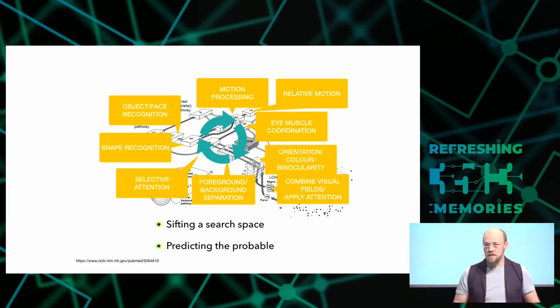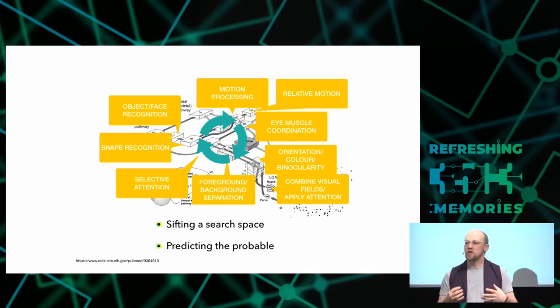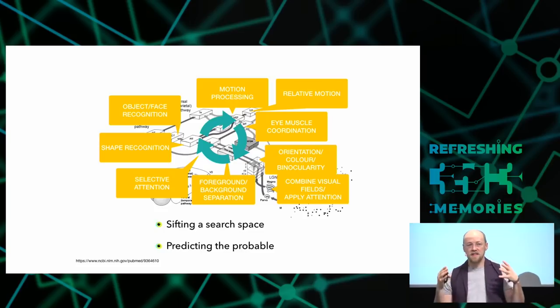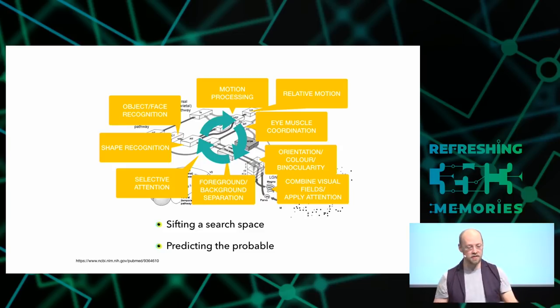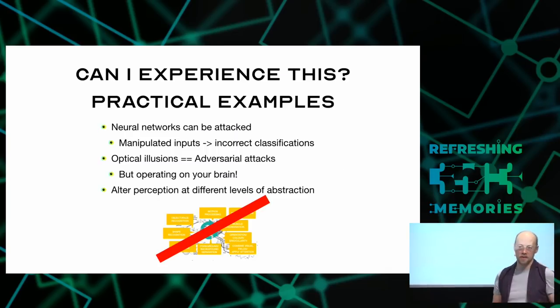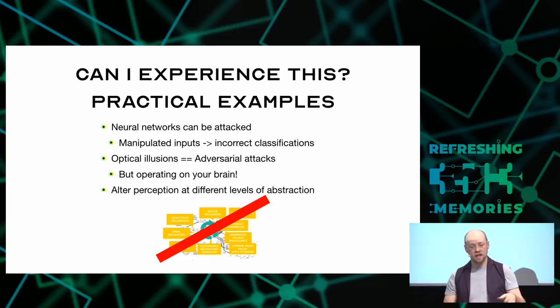So these are some of the specific jobs that these units are doing. And what they're doing is they're interacting with each other, they're negotiating. The output of these classifiers are flying backwards and forwards and round about, and they're sifting a search space. They're trying to find the probable. What is it that you're probably looking at, given this crazy mess of signals that are coming in? So these are all just words. Can you experience this? Yes, you can.